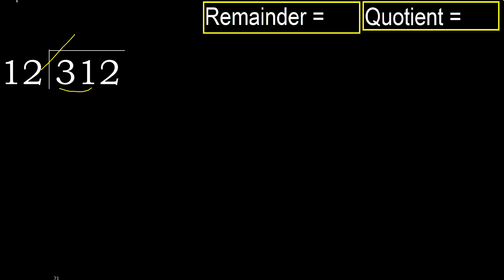12 multiply by 3 is 36. 36 is greater, so multiply by 2. 24 is not greater, ok. 31 minus 24 is 7.